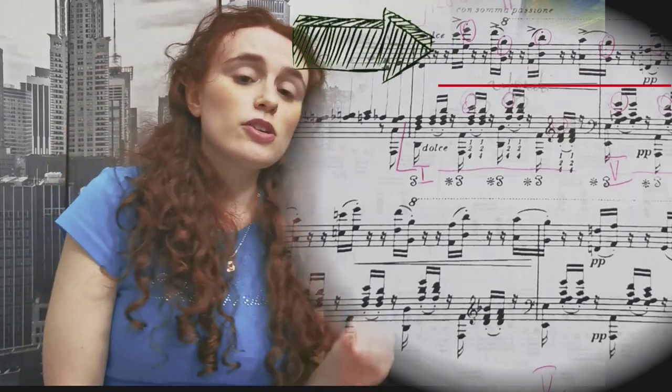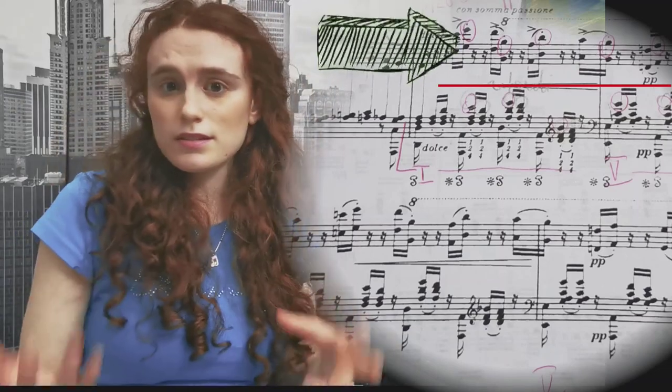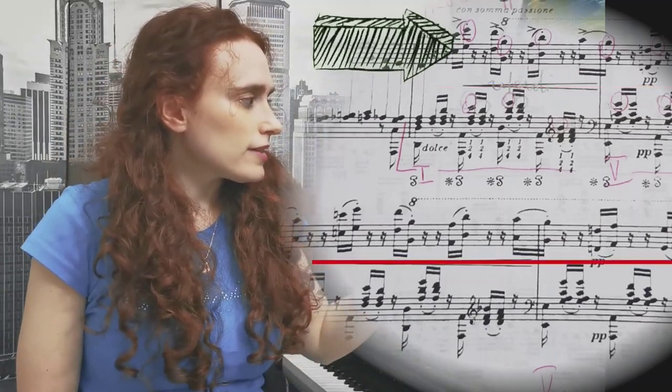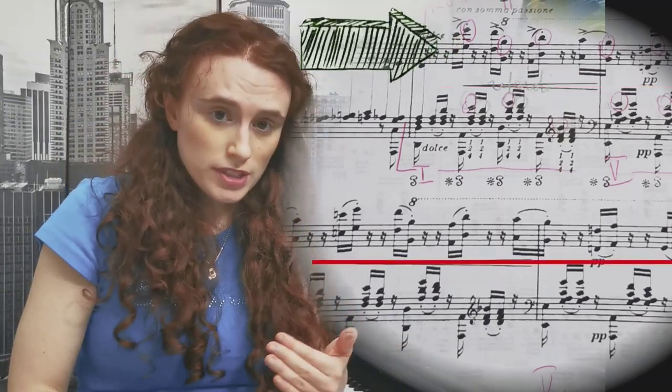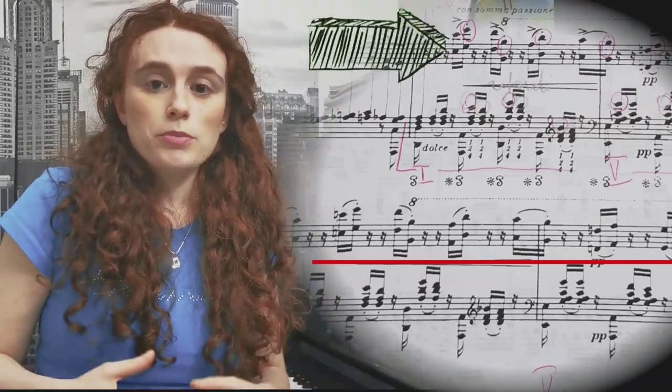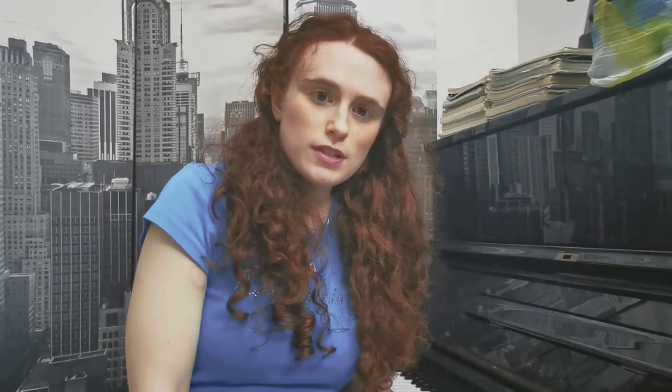Here we return to the main key of the piece, which is B-flat major. We can see that the right hand has a sequence of octaves, which represents one of the most important themes from the 'Bella figlia dell'amore' quartet by Verdi. The piano transcription is very similar to Verdi's opera, so this sequence is very easy to memorize, and for this reason I used only auditory memory by repeating the sequence.